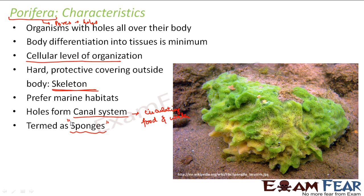To summarize Porifera: they have holes throughout their body; holes help in circulating food and water; they have a cellular level of organization with no tissues and no organs. Different types of cells perform various activities like ingestion, digestion, secretion of skeletal fibers, and nutrient transportation. They do not have muscle cells, and therefore they are immobile.